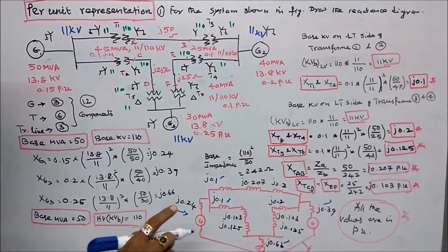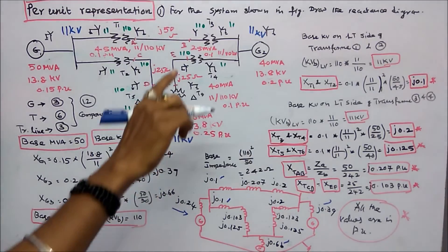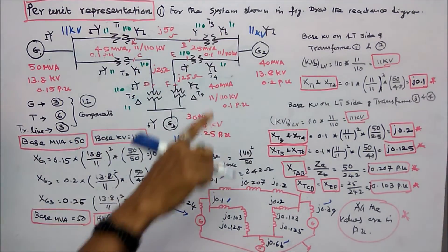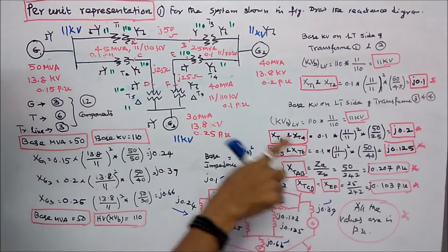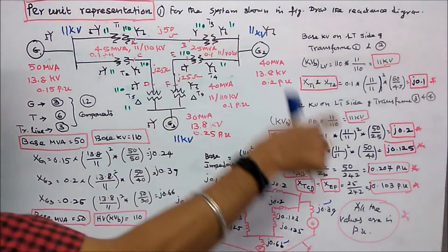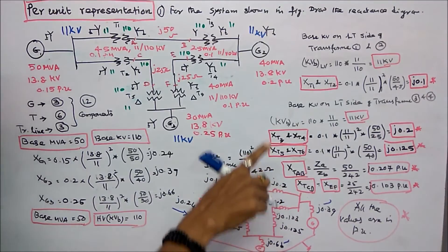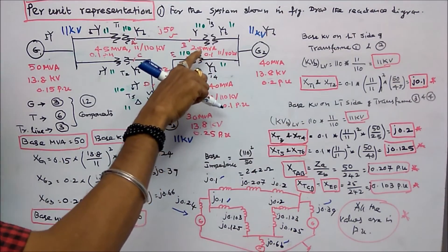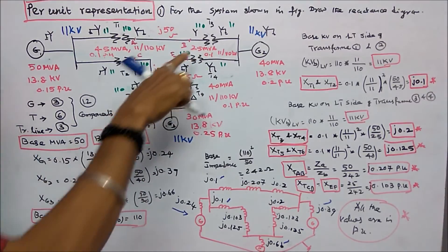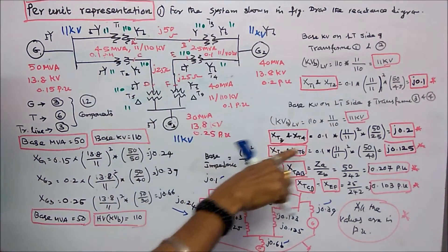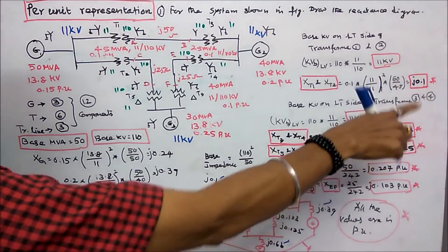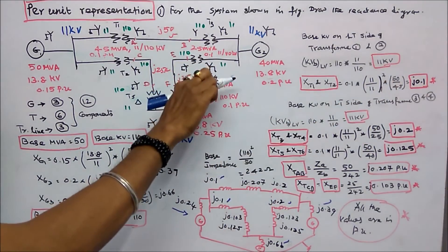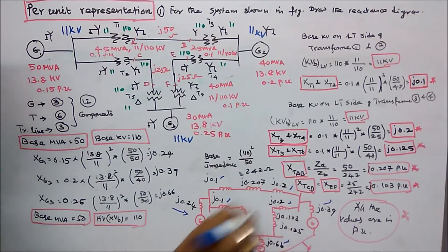For transformers T3 and T4: per unit = 0.1 × (11/11)² × (50/25) = j0.2. Both T3 and T4 are j0.2 per unit.